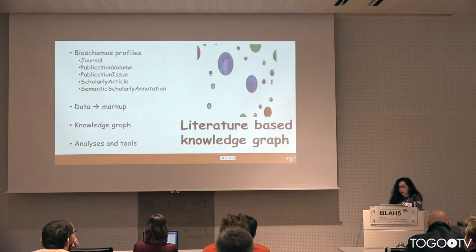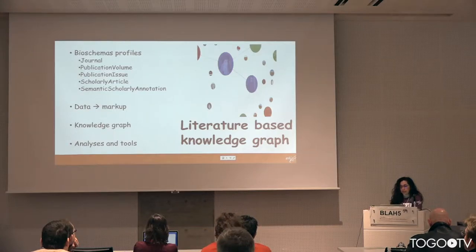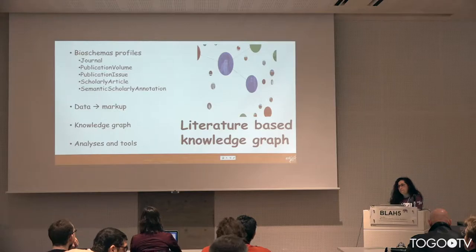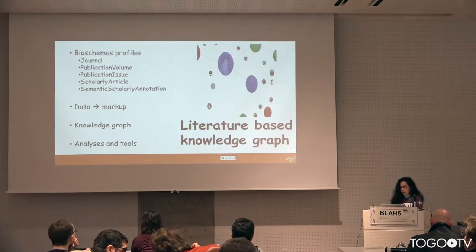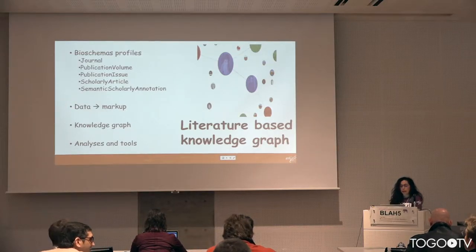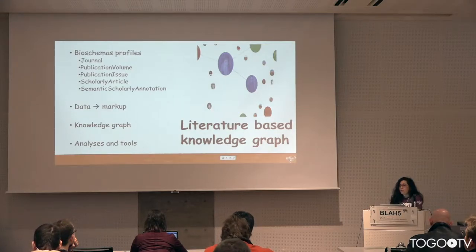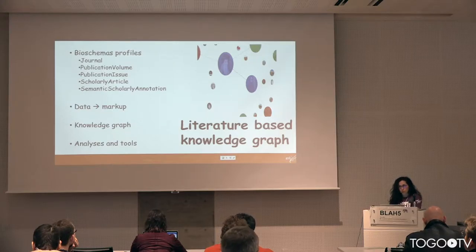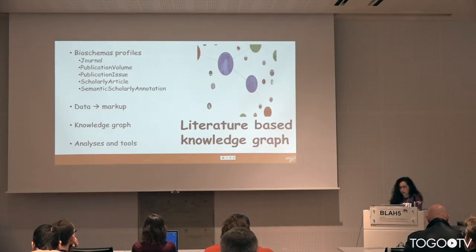In BioTIA to BioSchemas, the first thing we did — which is already done and available on the bioschemas.org website — was working on profiles mimicking what BioTIA defines for scholarly articles. We have five profiles: journal, publication volume, publication issue, and scholarly article, which already exist as types in schema.org. We provided the recommended, optional, and other elements for those, and we created an additional one — the semantic scholarly annotation — so we can model semantic annotations.